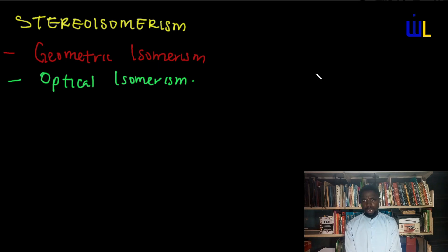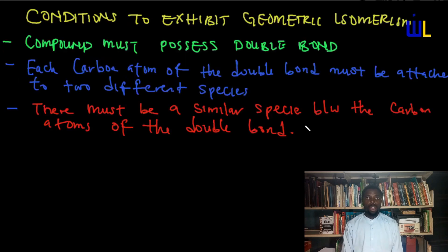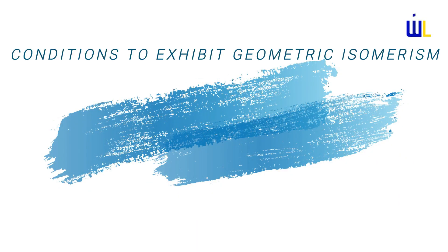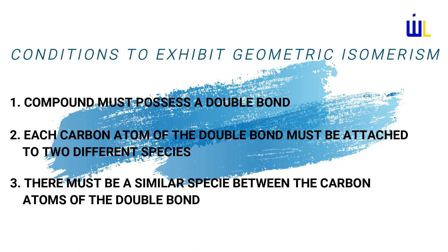There are conditions required for a compound to exhibit geometric isomerism. First, compounds must possess double bonds — any organic compound that would exhibit geometric isomerism must have a double bond. Second, each carbon atom of the double bond must be attached to two different species. Finally, there must be a similar species between the carbon atoms of the double bond.